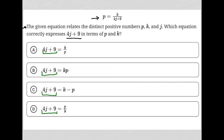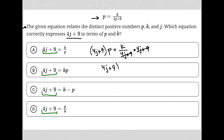So if we start off with what we've been provided — p equals k over 4j plus 9 — anytime what you're looking to isolate is in the denominator, we have to get it out of the denominator by multiplying both sides by that denominator. So that way it crosses out on the right-hand side, and now we're left with 4j plus 9 times p is equal to k.